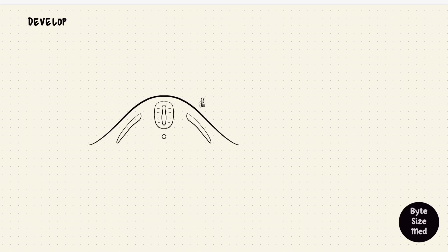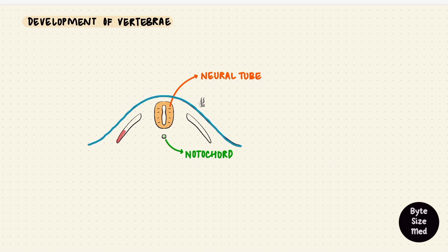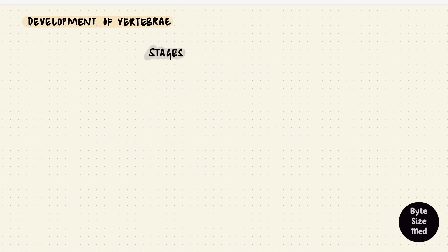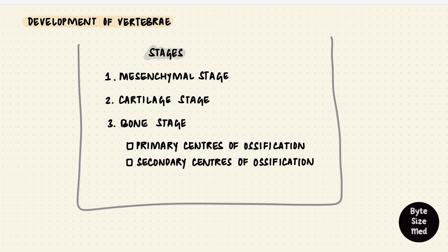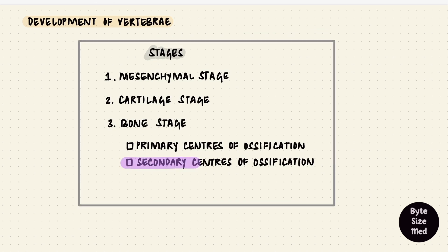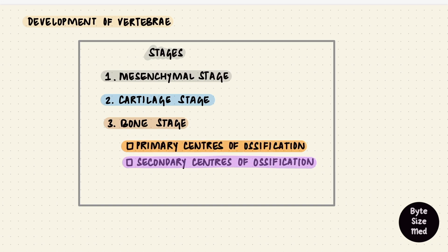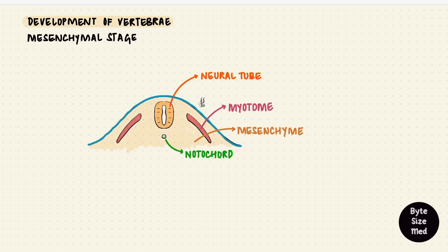In a transverse section of the embryo where the vertebrae are going to develop, we have the neural tube, which is going to form the spinal cord, the notochord, and then the body wall. Towards the body wall are myotomes, which are going to form muscles. Every bone has to go through stages of development. For the vertebrae there is the mesenchymal stage, the cartilage stage, and then the bone stage. During the bone stage, first primary ossification centers form and then secondary ossification centers form. These secondary centers only appear at puberty, so the process that starts in the embryo goes on until middle and late life.